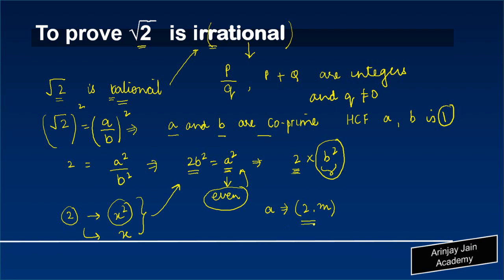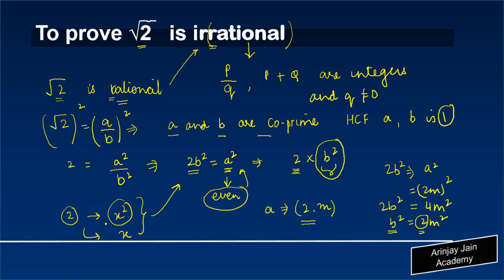Now if A is equal to 2M, then we can write that 2B square is equal to A square, or in other words, 2M square, which is 4M square. So 2B square is equal to 4M square, or in other words, B square is equal to 2M square. And what we get from this is that even B is divisible by 2, because again applying the same logic that if 2 divides X square, then 2 also divides X. In other words, B is also divisible by 2.